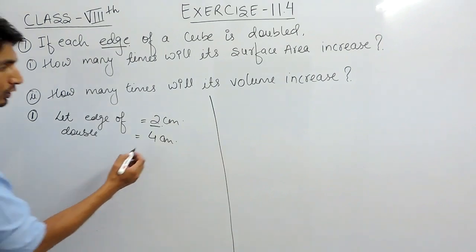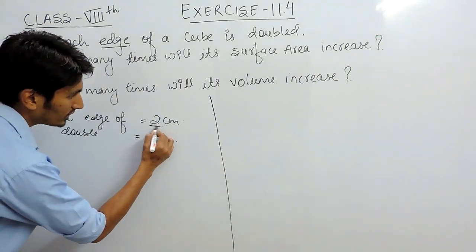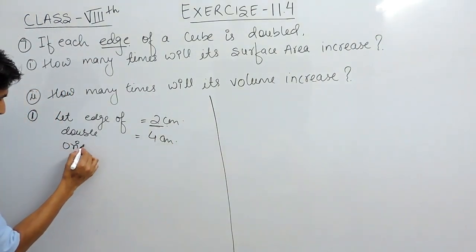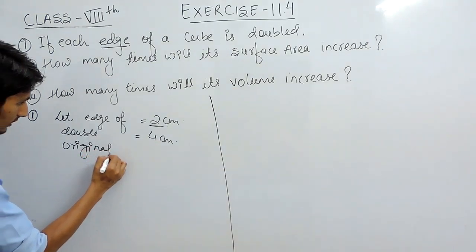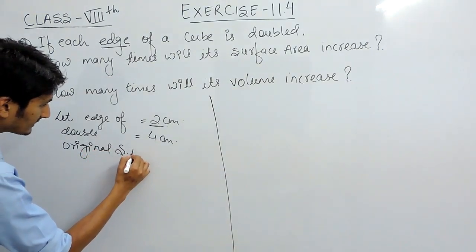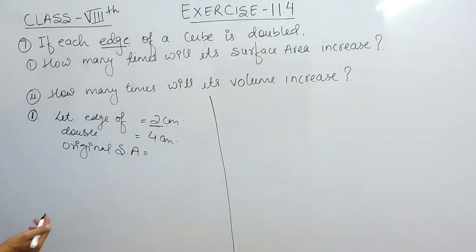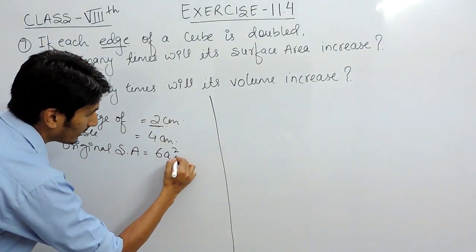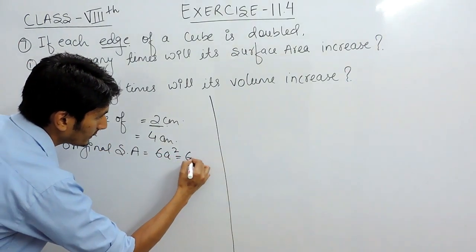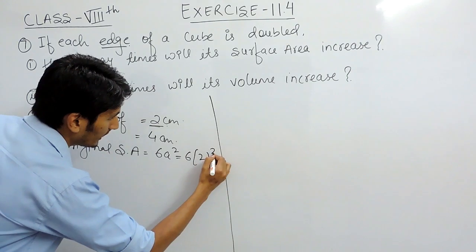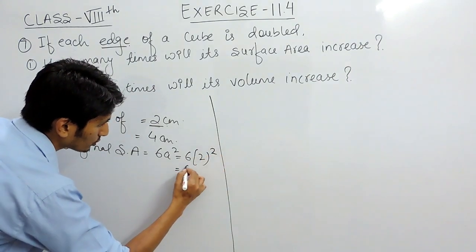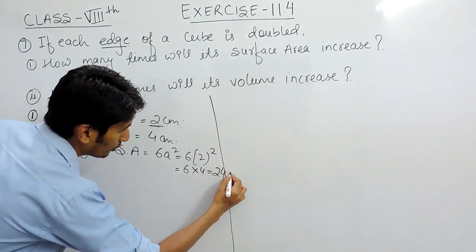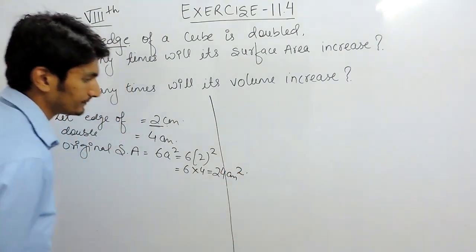Now let's find the original surface area. The surface area of a cube is 6a². So it should be 6 × (2)² = 6 × 4 = 24 centimeter square.